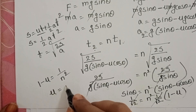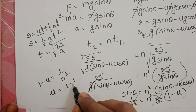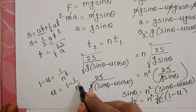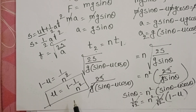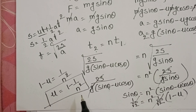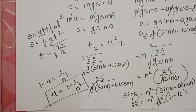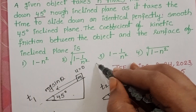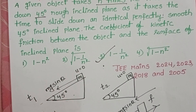From 1 = n²(1 − μ), we get 1 − μ = 1/n², so μ = 1 − 1/n². This is the coefficient of kinetic friction between the object and the surface of the rough inclined plane. The third option is correct.